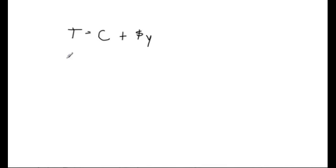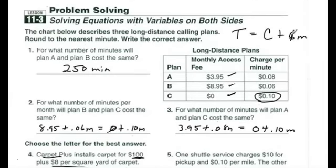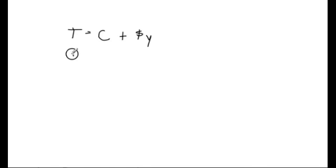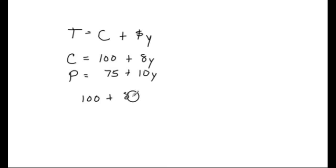The generic equation is: total equals a constant fee plus so much money per yard of carpet. Carpet World — let's call it C — charged $100 to begin with but only $8 per yard. Carpet Plus — we'll call it P — charged $75 to come out but $10 per yard. So at some point, when you get more carpet, even though the fee is less, the per-yard cost makes it more expensive. Just like we did in problems 1, 2, and 3, we make the equations equal: $100 + 8y = $75 + 10y.